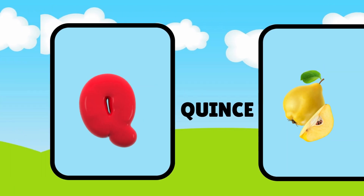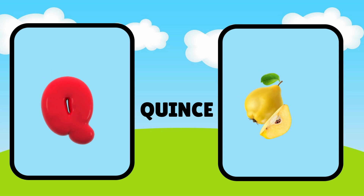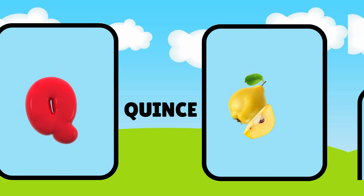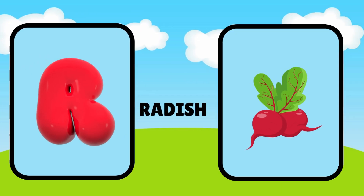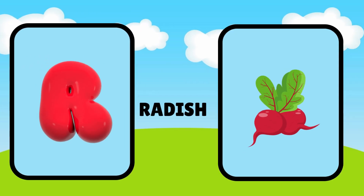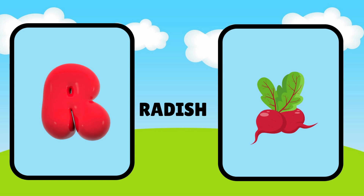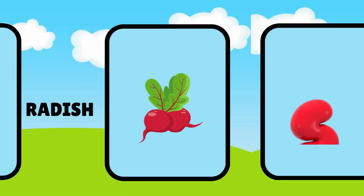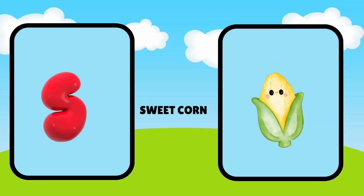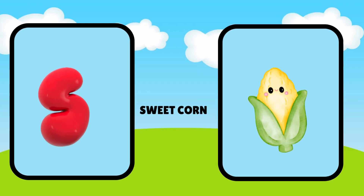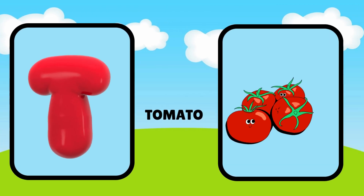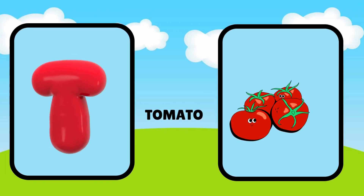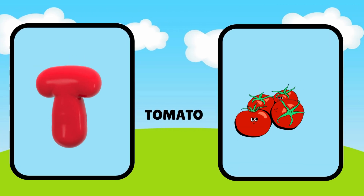Q is for quince, quh, quince. R is for radish, rr, radish. S is for sweet corn, suh, sweet corn. T is for tomato, tuh, tomato.